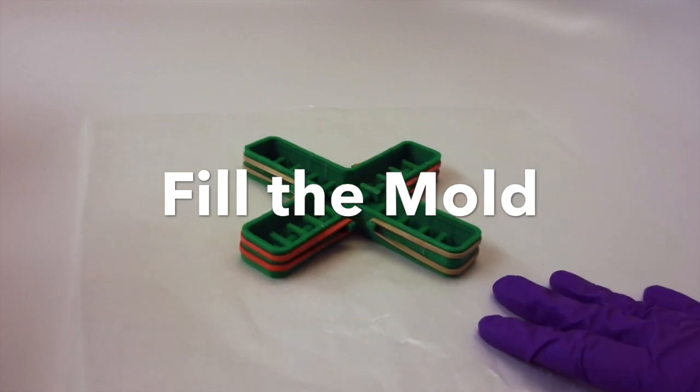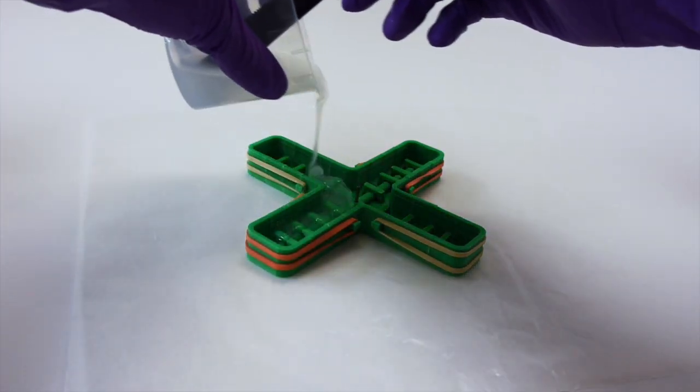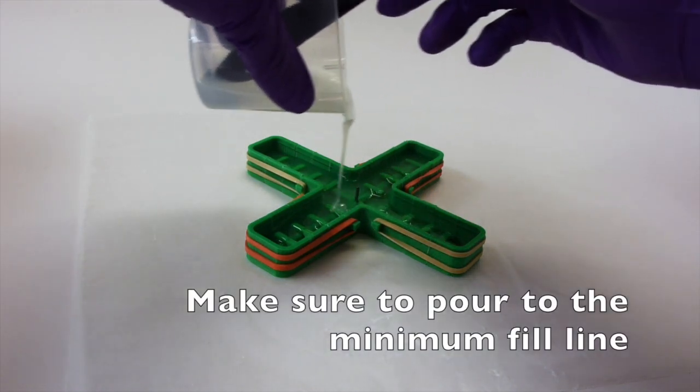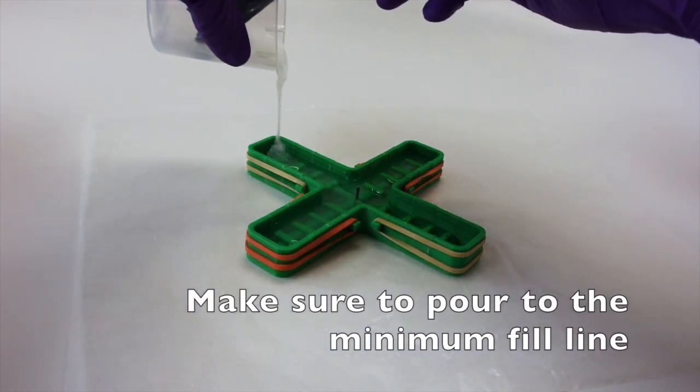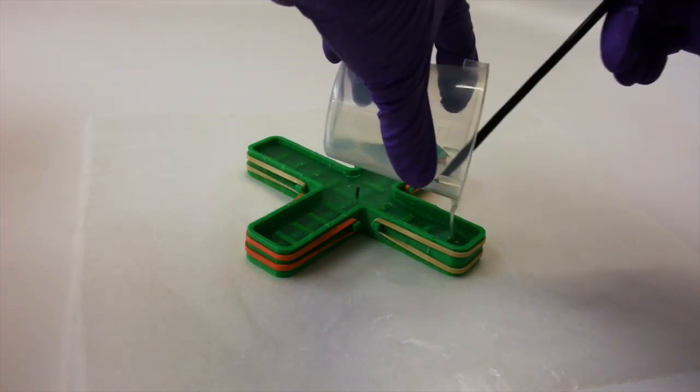Now we need to fill the mold. You should have enough EcoFlex to pour to the minimum fill line and also fill the coupler. If you don't have enough EcoFlex, mix a small amount more.